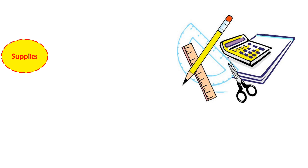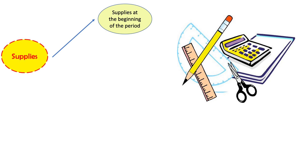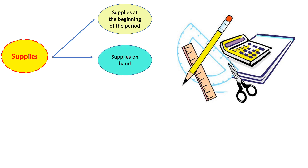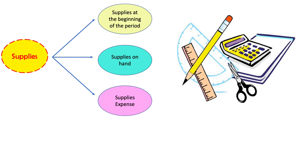When we talk about supplies, we need to identify three items. First, we need to identify the supplies at the beginning of the period — the value of our supplies when our period started. Then we need to know the supplies on hand, which means how much we still have at the end of the period. Finally, we need to know how much we used, which is our supplies expense.